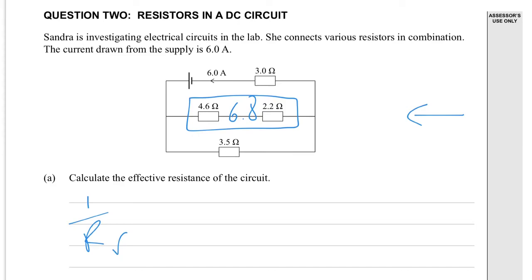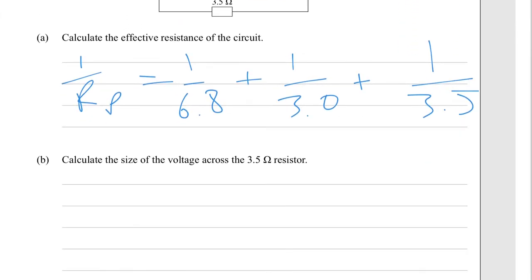1 over R_P equals 1 over 6.8 plus 1 over 3.0 plus 1 over 3.5, and you rearrange that, add it all up for R_P, and that will give you the value of the resistance. Calculate the size of the voltage across the 3.5 ohm - oh hang on, that's not correct.